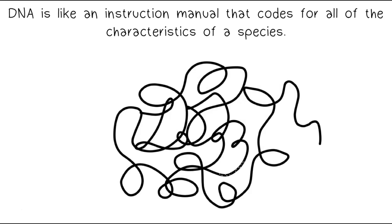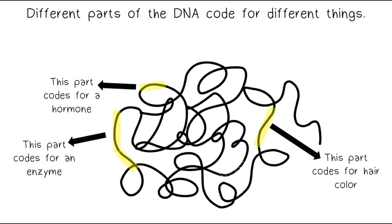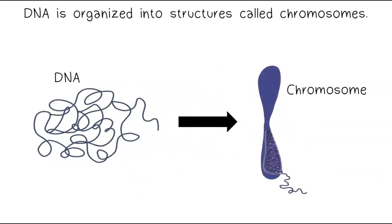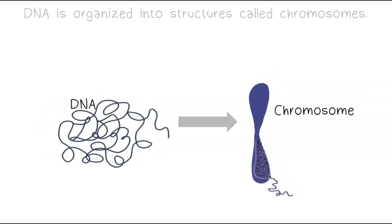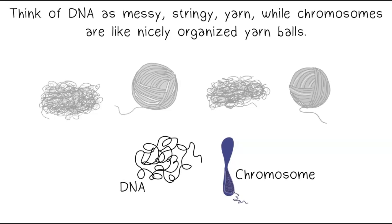DNA is like an instruction manual that codes for all of the characteristics of a species. Different parts of the DNA code for different things. DNA is organized into structures called chromosomes. Think of DNA as messy, stringy yarn, while chromosomes are like nicely organized yarn balls.